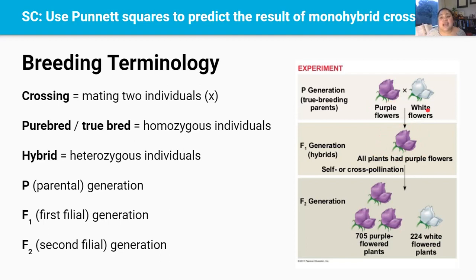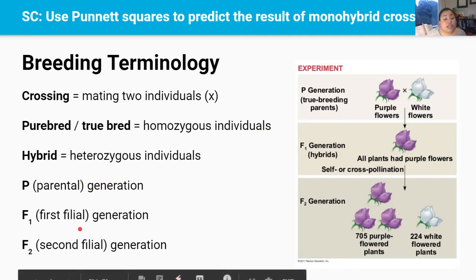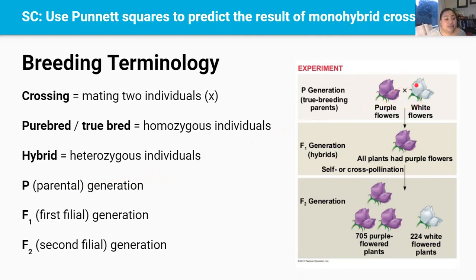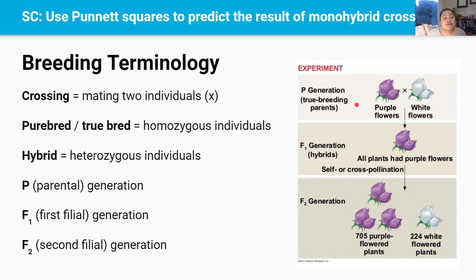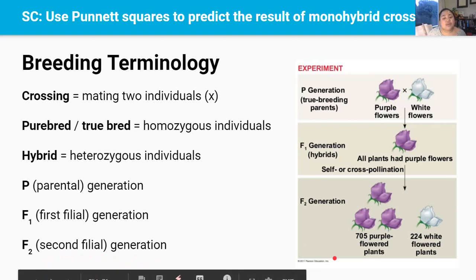So to get a hybrid purple plant, they mated the truebred purple plant and the white truebred plant. These next three words relate to the generations involved in a breeding experiment. The P, or parental generation, refers to the truebreeding parents initially mated. The F1, or first filial generation, refers to the first generation of offspring. If those F1 individuals are then self-pollinated or mated together, their offspring are called the F2, or second filial generation. Filial is derived from the Latin word for son, representing generations of offspring from the parental generation.